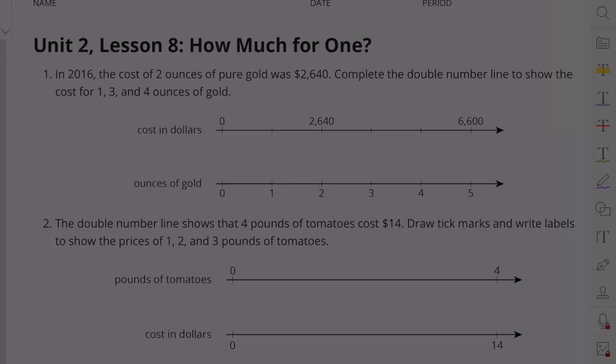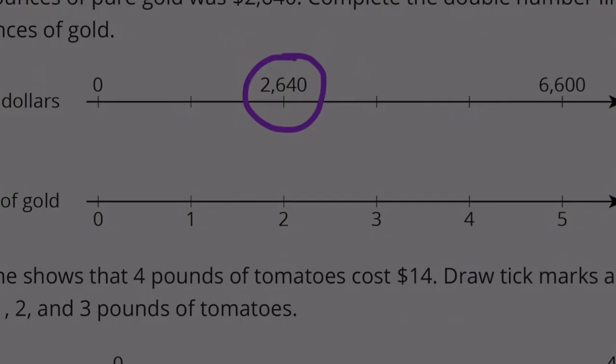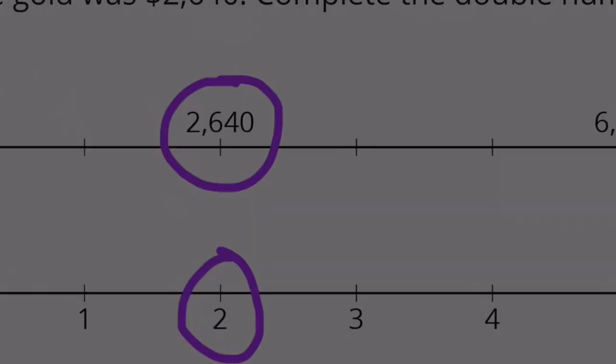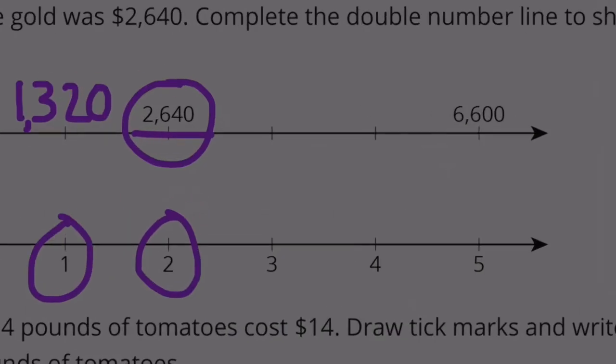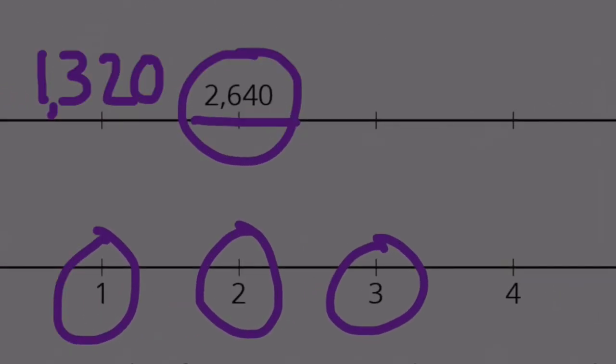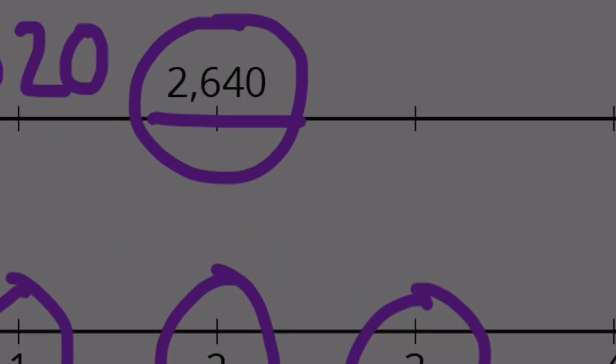Unit 2 Lesson 8: How Much for One? Number one: in 2016, the cost of two ounces of pure gold was $2,640. Complete the double number line to show the cost for one, three, and four ounces of gold. Two ounces of gold is $2,640, so one ounce of gold will be half of that — half of $2,640 is $1,320. Three ounces of gold would be $1,320 times three, or we could add $1,320 to $2,640, which gives $3,960.